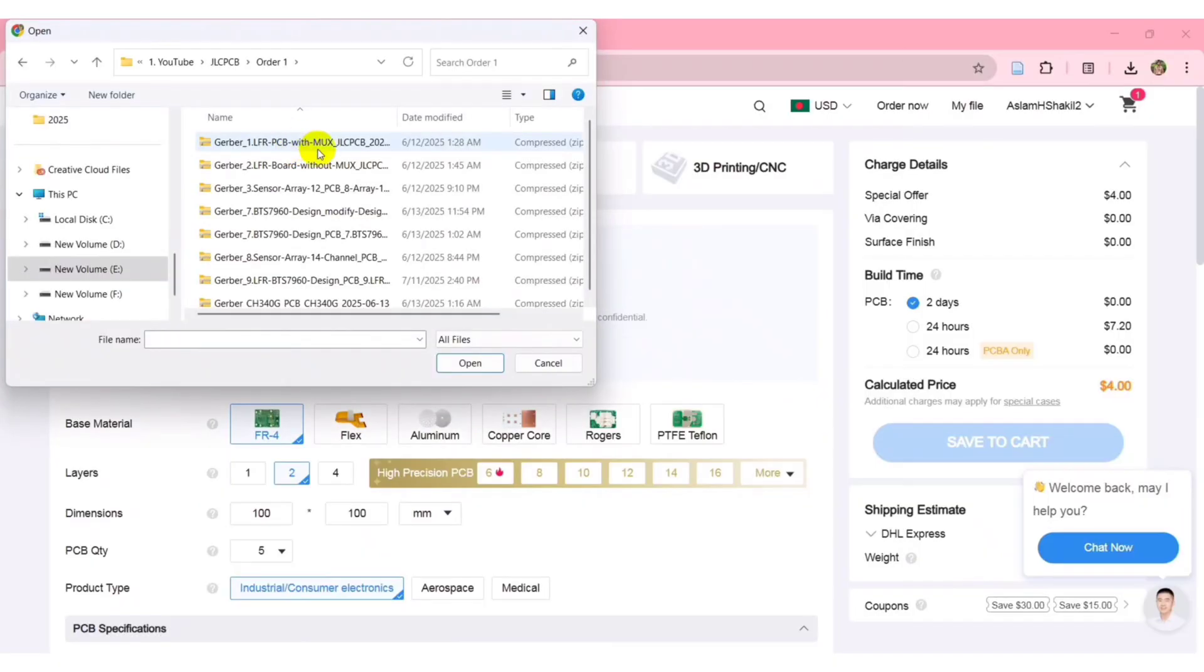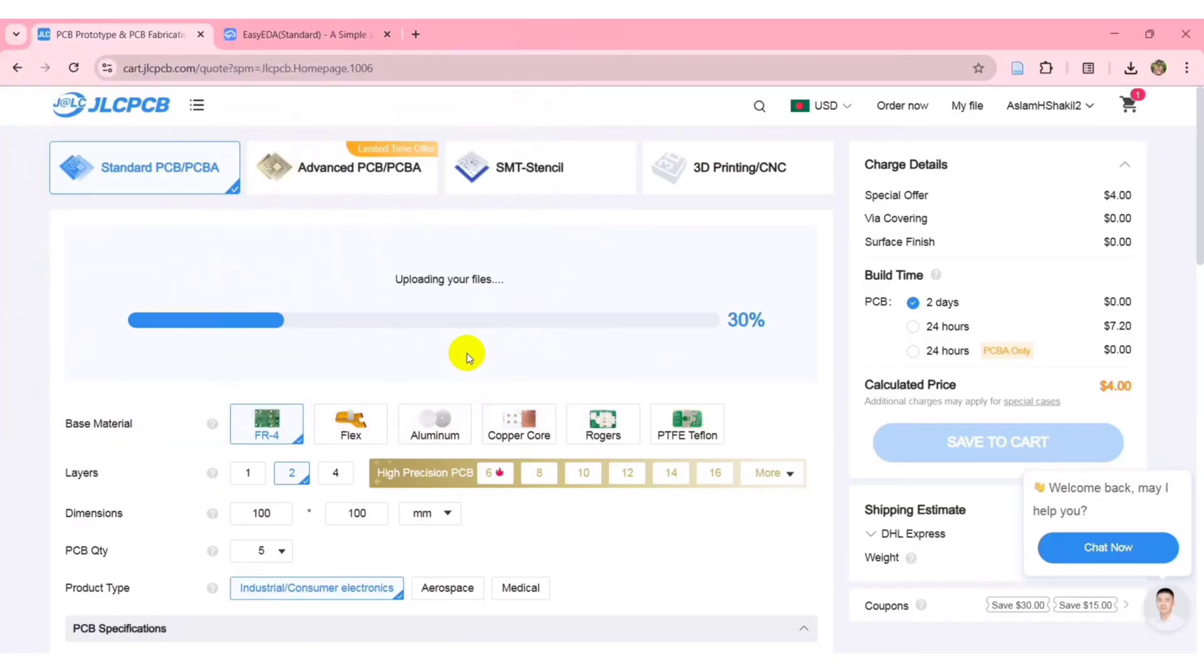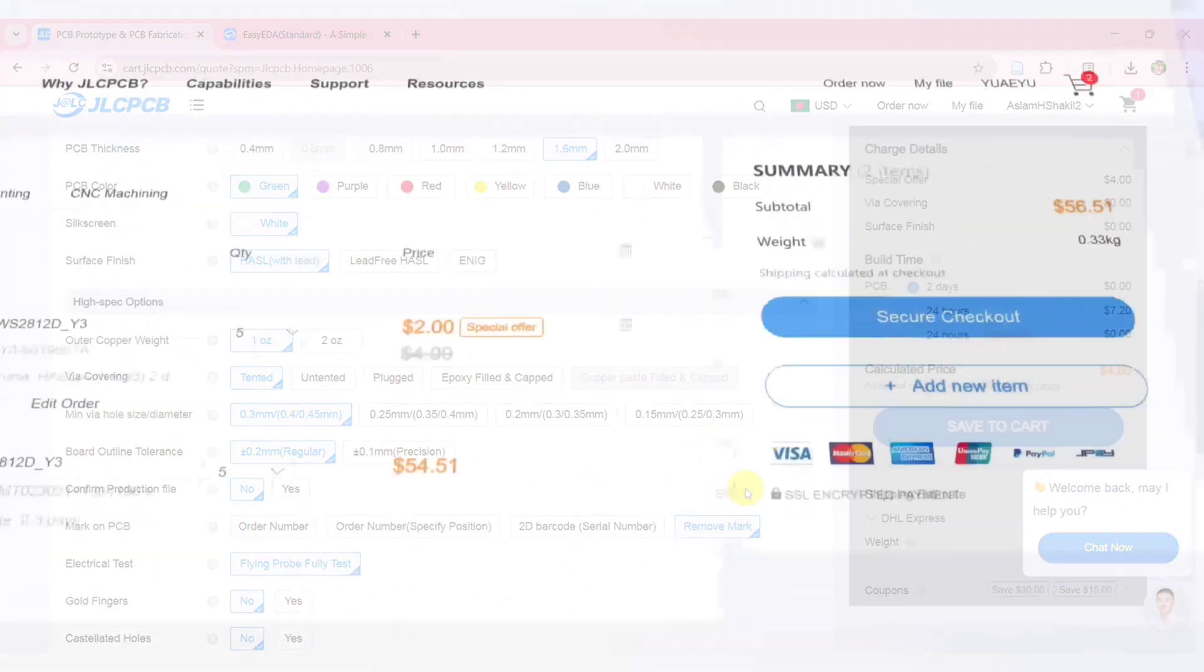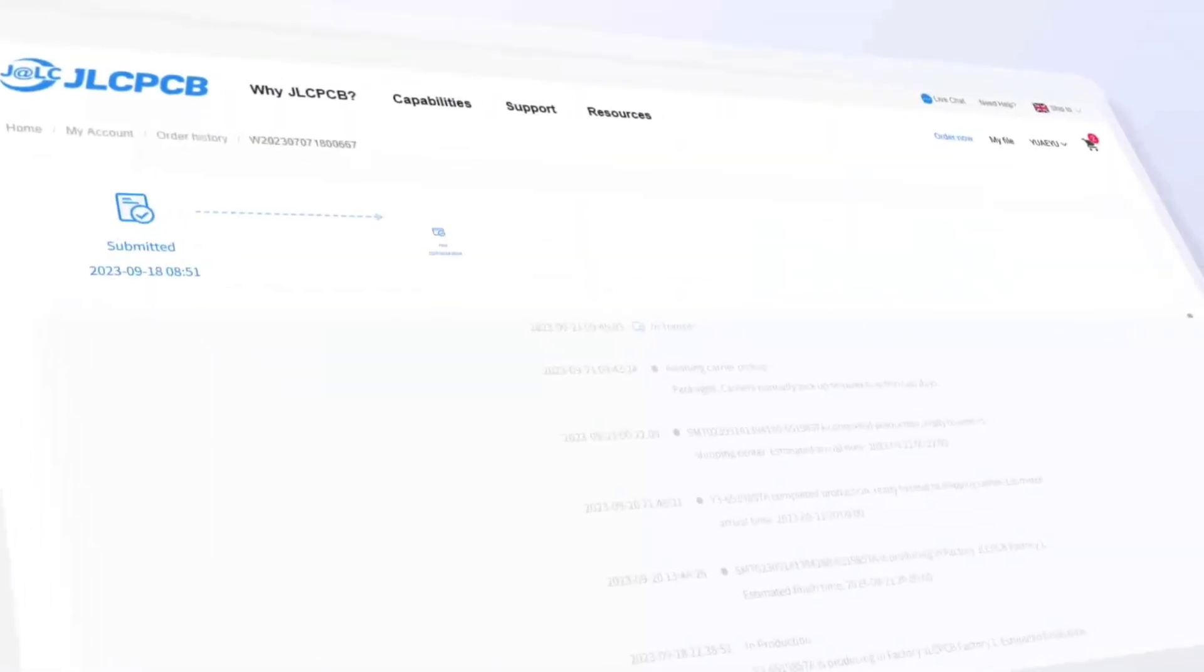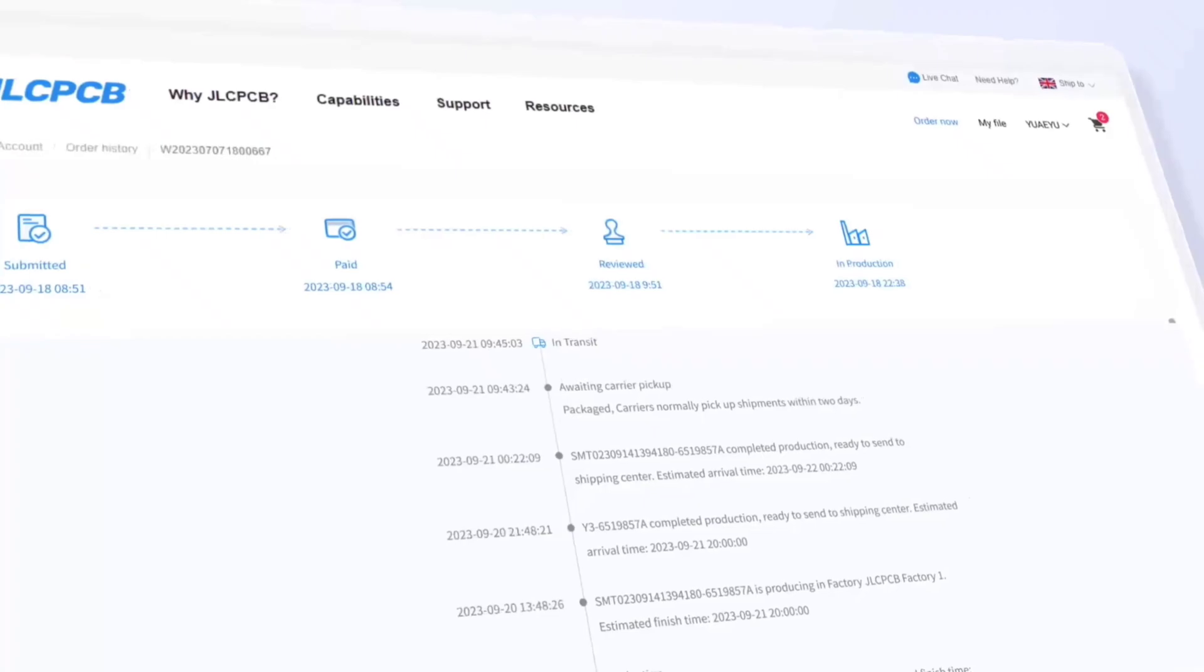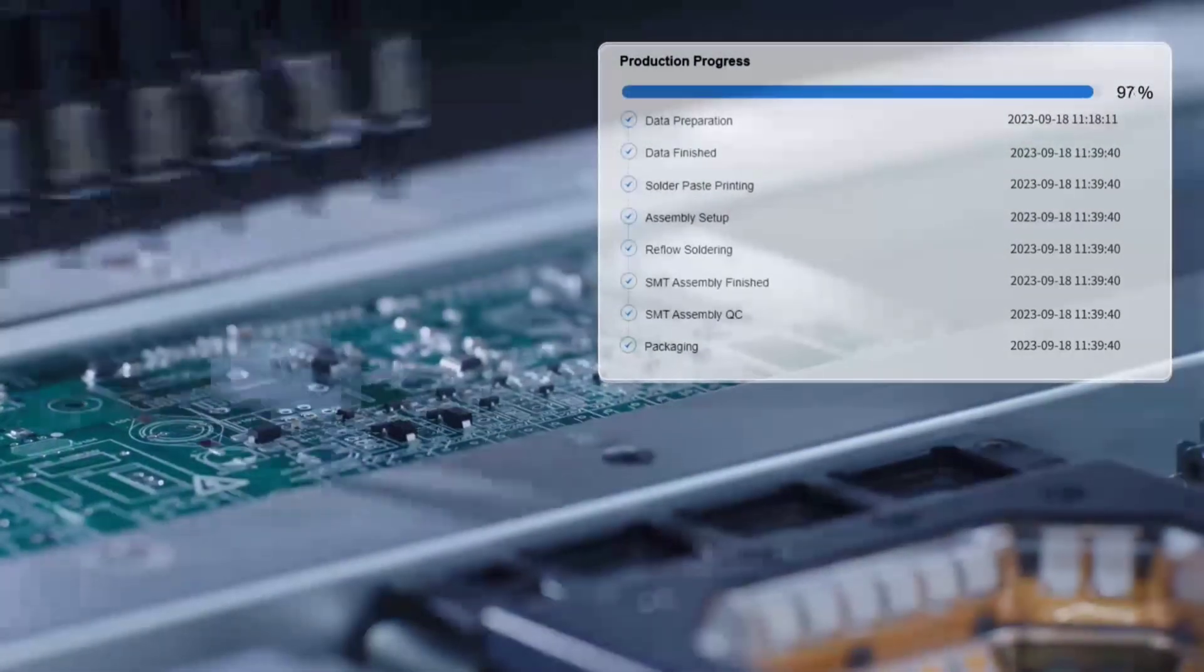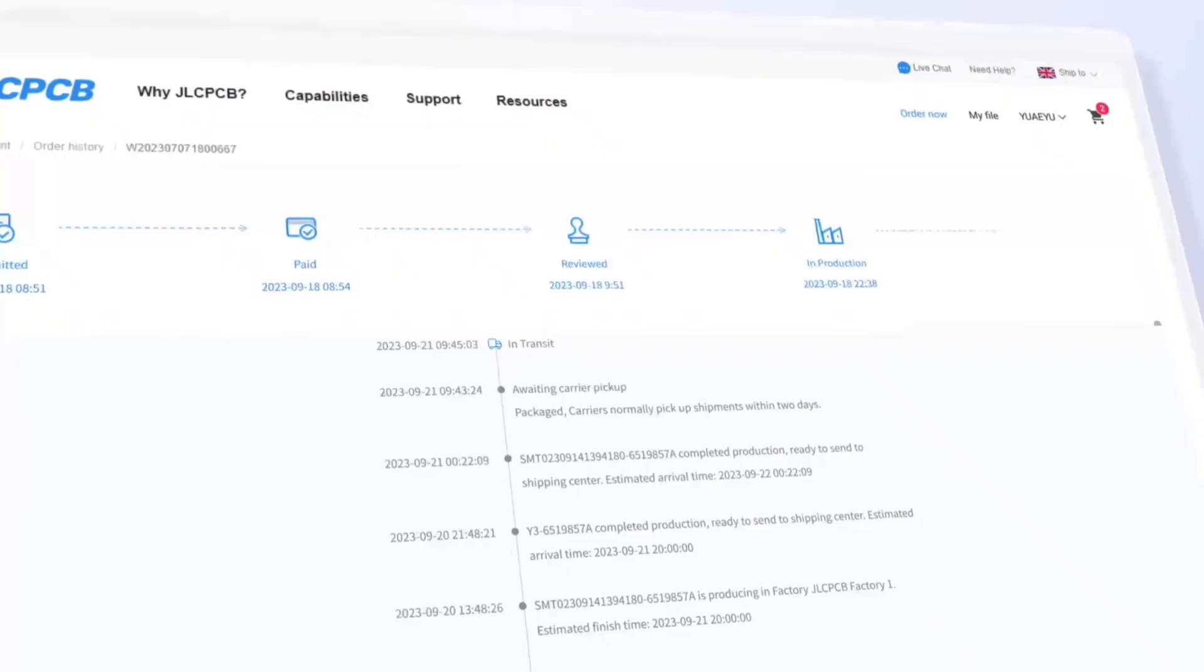To place my order, I simply uploaded the Gerber file to their website, selected the quantity and color options, and finalized the order. You can get 5 high-quality PCBs for just $2. What's more impressive is that JLCPCB provides real-time tracking of the entire production process, so you know exactly what stage your order is in.